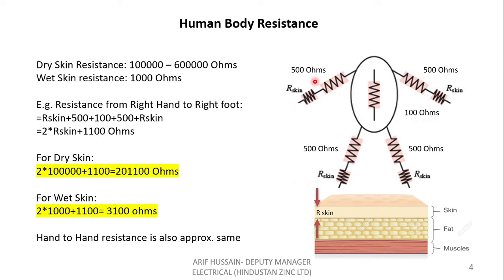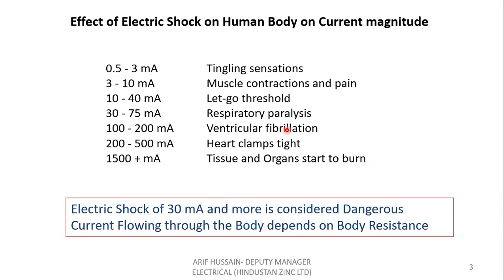If a person is in dry condition, their skin is dry, and the skin resistance will be around 1 lakh to 6 lakh ohms. Please note we are talking about the resistance of this very thin layer of skin only. However, in wet condition, it reduces very drastically — down to around 1000 ohms. So let us try to calculate the total resistance using this same example where the current enters through the hand and exits through the foot.